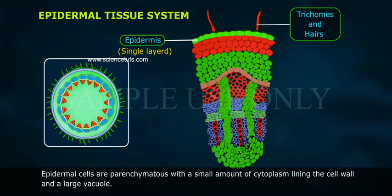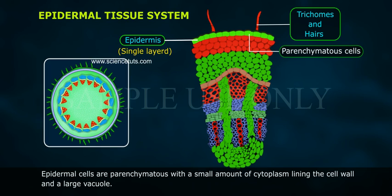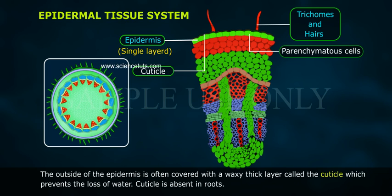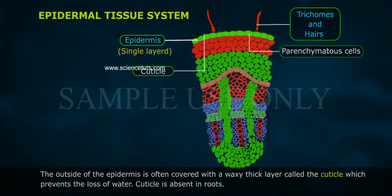Epidermal cells are parenchymatous, with a small amount of cytoplasm lining the cell wall and a large vacuole. The outside of the epidermis is often covered with a wax-thick layer called the cuticle, which prevents the loss of water. Cuticle is absent in roots.